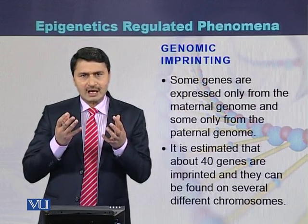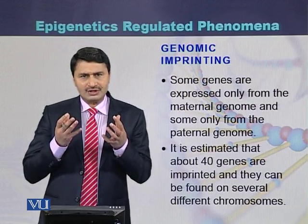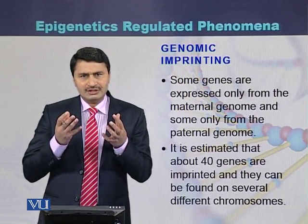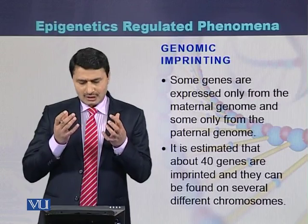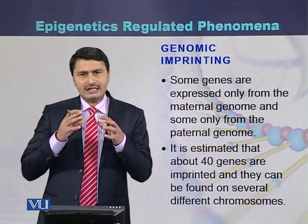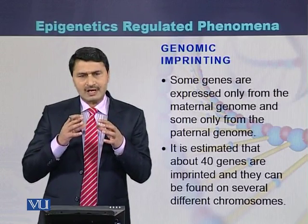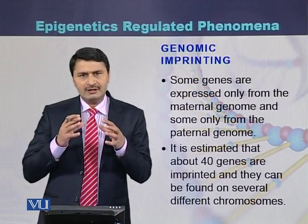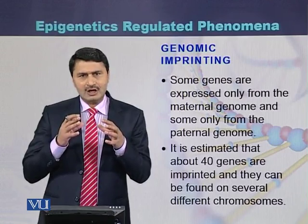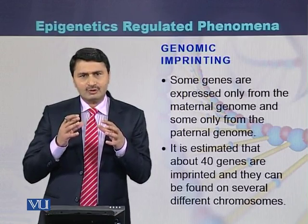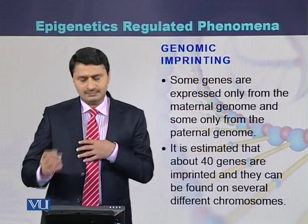There are approximately 40 different genes that have been shown to be responsible for genomic imprinting, and these are present on different chromosomes.